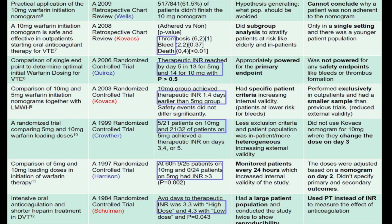KOVACS is a name that appears multiple times in this chart, and this author had significant influence in pushing the 10 mg loading dose. In his 2003 trial, it was shown that the 10 mg loading dose achieved a therapeutic INR 1.4 days earlier than the 5 mg group. They also had more specific patient criteria than Crothier et al. by limiting the population to outpatients only. Notably, the trial was not powered for any safety endpoints like bleeds or VTE recurrence.